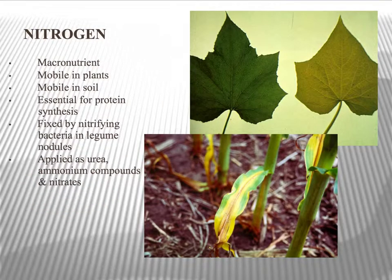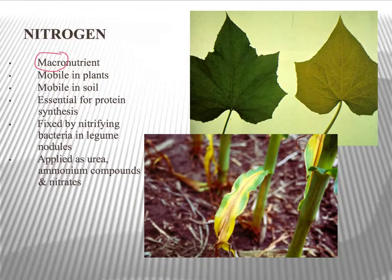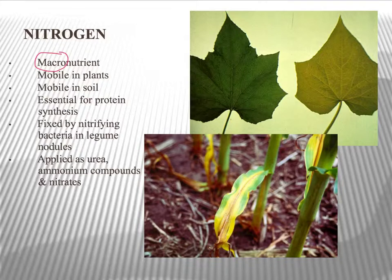The first nutrient we're going to consider is nitrogen. Nitrogen is classified as a macronutrient — macro means large. If something is not a macronutrient, it's a micronutrient, and micronutrients are applied in tiny quantities. Macronutrients are the stuff required in quite large quantities.